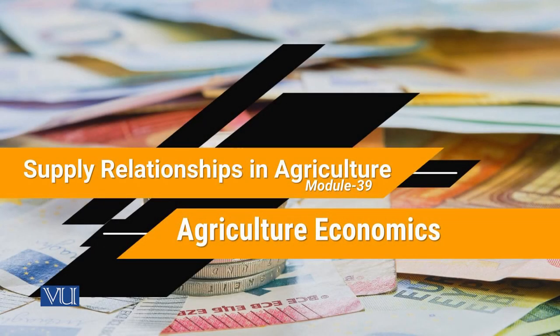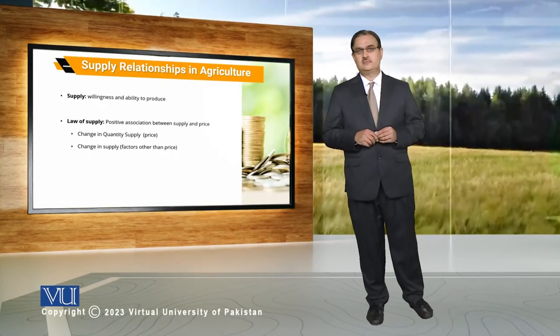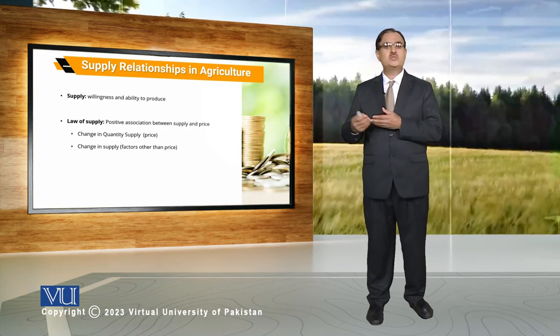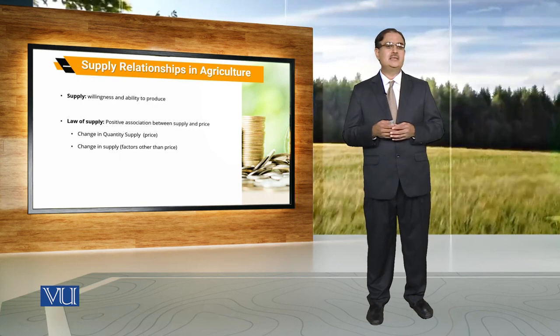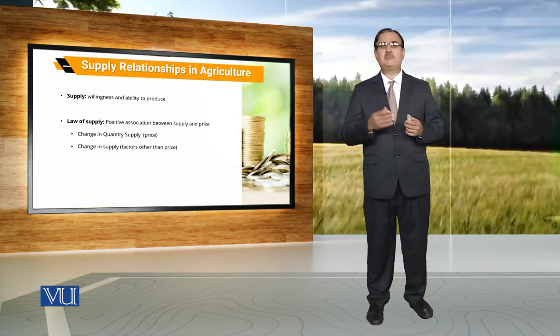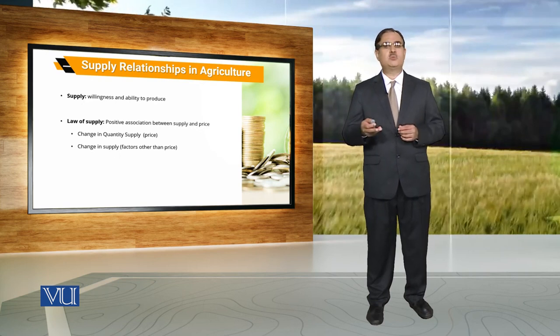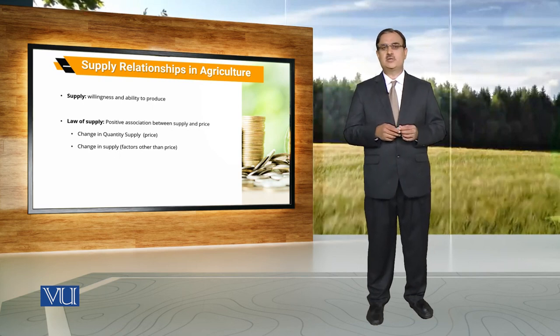Module 39: Supply relationships in agriculture. To understand supply relationships in agriculture, one should have some understanding about supply and the law of supply. Supply is the willingness and ability to produce against different prices. There is a positive association between quantity supplied and price — if price of a commodity increases, there is an increase in quantity supplied for that particular commodity.